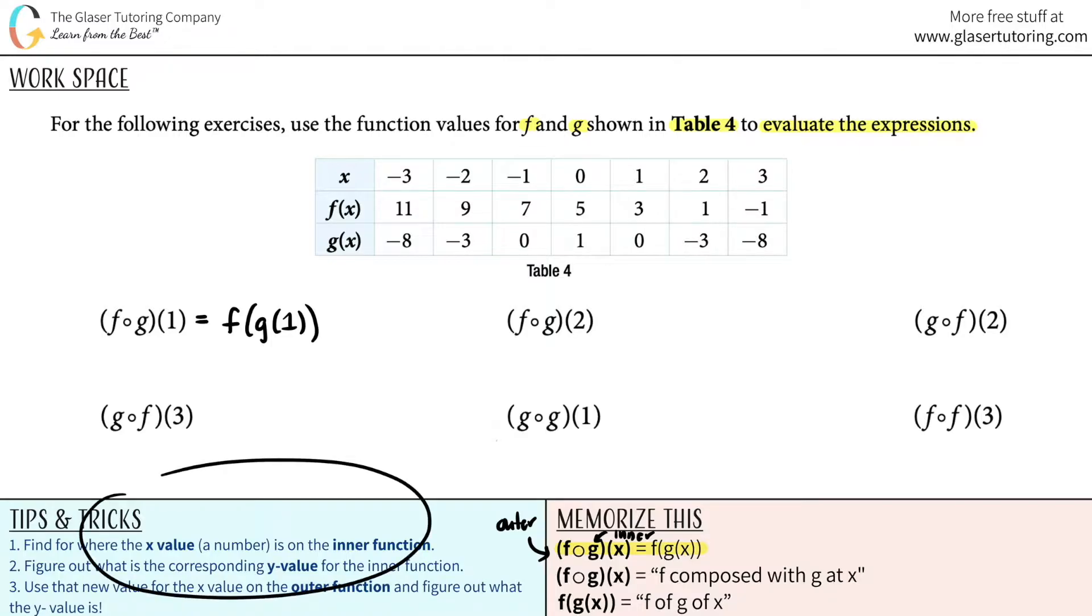Now, tips and tricks off of that. Whenever you need to work with a graph with composite functions, you need to find where the x value is, which is going to be a number on the inner function. Remember, with composite functions, we always work from inner to outer. So there's two functions here. There's an f function and a g function. Which one is the inner function? Meaning which one is the one that's most inside the parentheses? If you said the g function, you are absolutely correct.